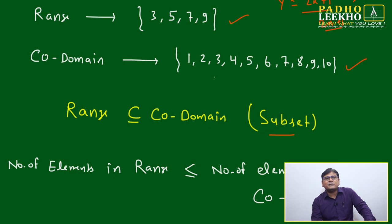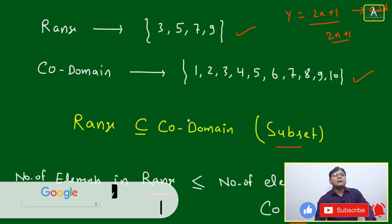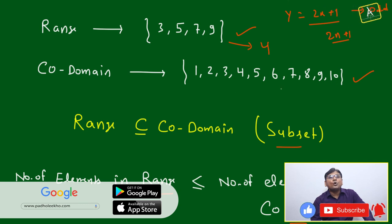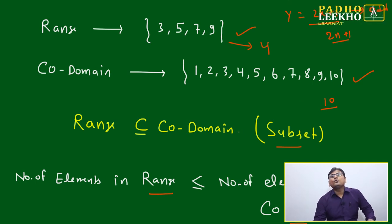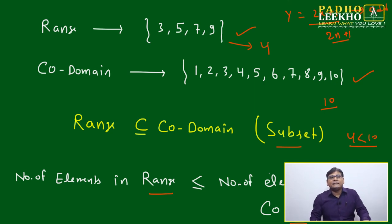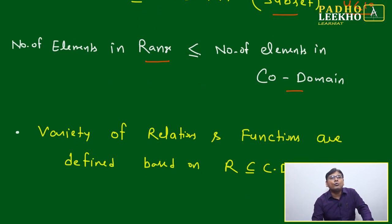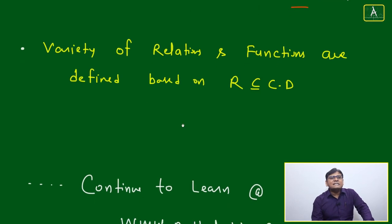Range {3, 5, 7, 9} is always a subset of natural numbers 1 to 10. In terms of counting: the number of elements in the range — which is 4 — will always be less than or equal to the number of elements in the co-domain — which is 10. Range will be exactly equal to co-domain only when the function is one-to-one and surjective (bijective); in that case the number of elements in range equals the number of elements in co-domain. In all other cases it will be less.